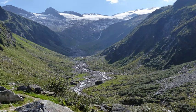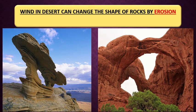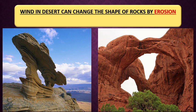Now we will take the wind. The wind in the desert can change the shape of rock by erosion. In the desert we have sand, and the wind can take the sand from one place to another - this process is called erosion. So the wind in the desert can change the shape of rocks by erosion. These rocks have different shapes.